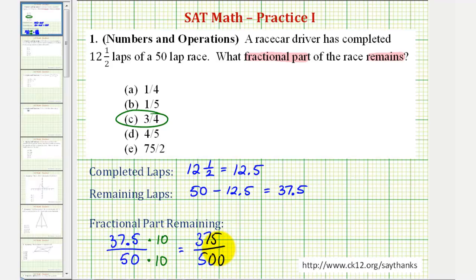And now we want to simplify by identifying the greatest common factor of 375 and 500, which is 125. So if we divide the numerator and denominator by 125, this would give us the simplified fraction of three-fourths.